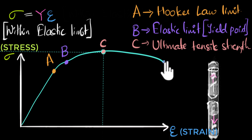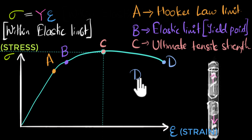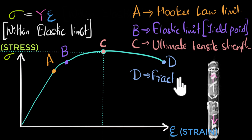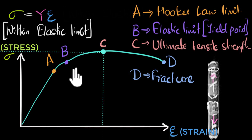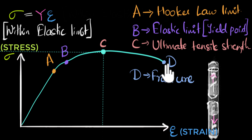We call the point where the material breaks point D — the fracture point. So this is what steel experiences as we go beyond the elastic region all the way to the fracture point.